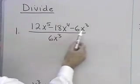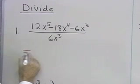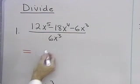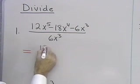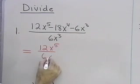Here I have this polynomial divided by 6x cubed. The instructions are divide. I'm going to use something similar to the distributive property when I divide by a monomial and simply write each term in the numerator over that denominator.